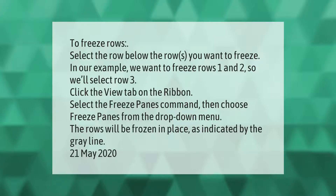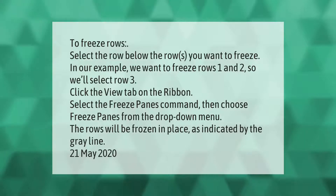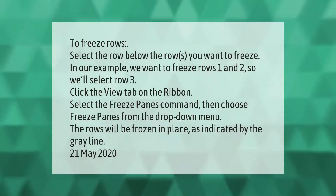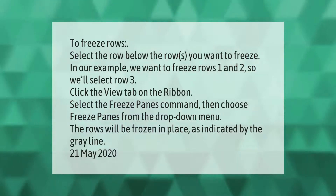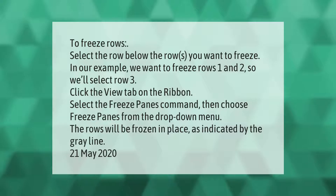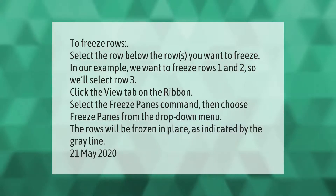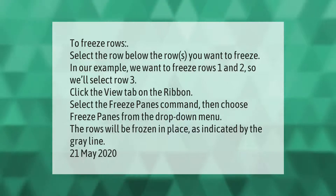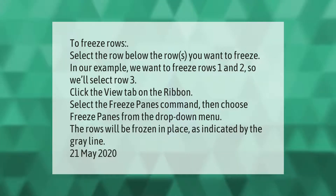To freeze rows, select the row below the rows you want to freeze. In our example, we want to freeze rows one and two, so we'll select row three. Click the View tab on the ribbon, select the Freeze Panes command, then choose Freeze Panes from the drop-down menu. The rows will be frozen in place, as indicated by the gray line.